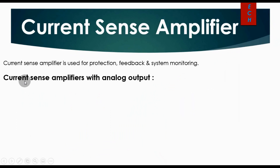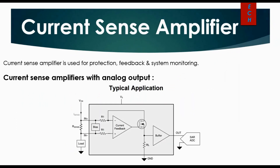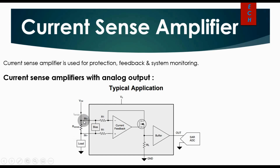First, let us look at the current sense amplifier with analog output. This is the typical application of a current sense amplifier with analog output. You can see here there is a common mode voltage VCM, which goes to the shunt resistance R-sense, and this is the load. This is basically a high-side current sensing, where IN-plus goes to the inverting terminal and IN-minus goes to the non-inverting terminal.